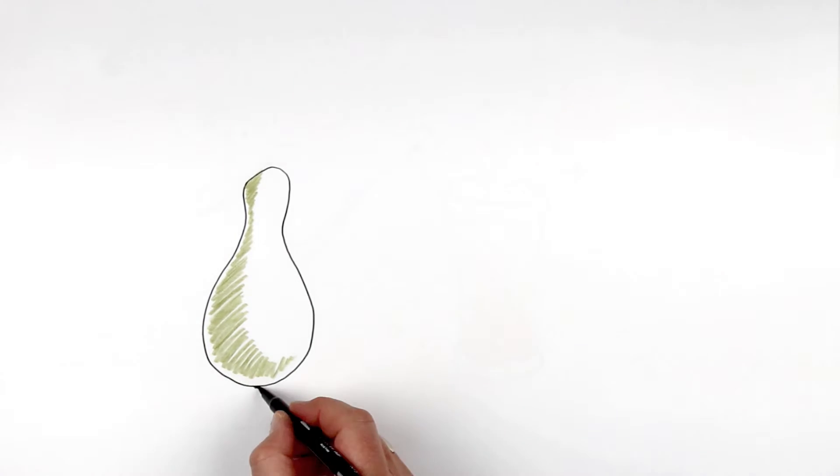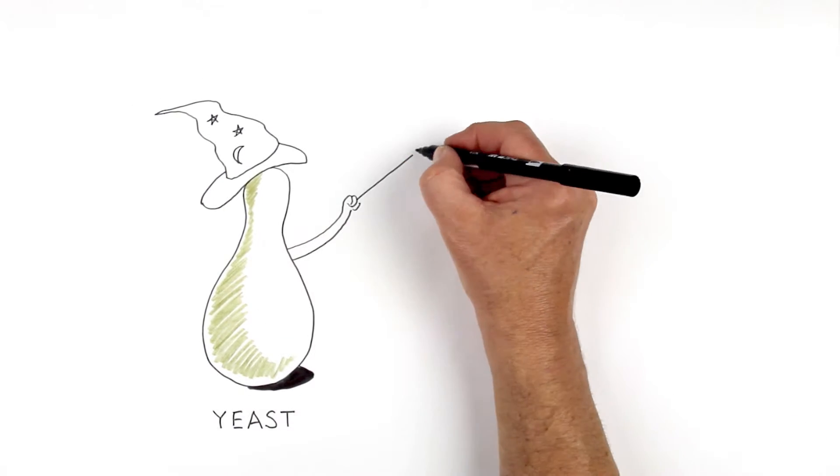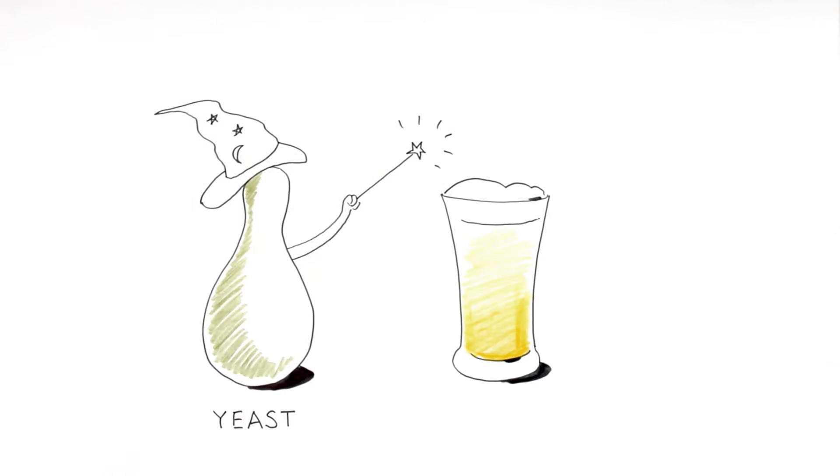The last of our primary ingredients is a very special little creature called yeast. Yeast is the magic that turns the whole thing into beer. The starches in the grain are converted into sugars during brewing, and in fermentation, the yeast converts these sugars into alcohol and adds a lot of flavours and carbon dioxide. Yeast really is a magical little critter.